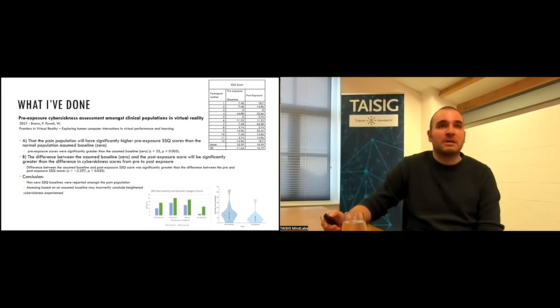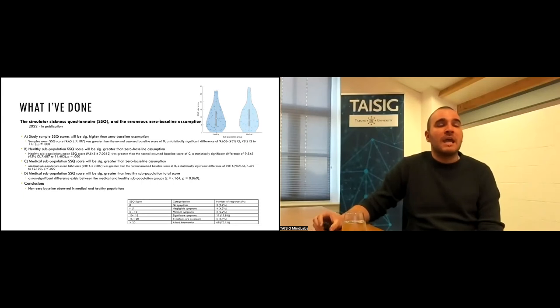Because what we found, especially in our small participant pool, is that was incorrect. So the main two hypotheses that we actually got out of this: specifically we were looking at whether the pain population have significantly higher pre-exposure scores than the normal assumed baseline. Now this was fairly much a given based on the work we had previously done, because in the table to the right you can see the pre-exposure and post-exposure scores. Of the 12 participants we had in this small study, only two of them actually exhibited a zero baseline, meaning that every other participant actually started with a non-zero baseline. And then furthermore we were actually looking at the differences between the assumed baseline and our actual known baseline. And what we found here is that the differences between the assumed baseline and the post-exposure scores was significantly greater than the difference between the pre-exposure and the post-exposure scores. And what this was actually trying to highlight, this result, is that if you use an assumption, you are going to get drastically different results than what you would actually if you collected a pre-exposure.